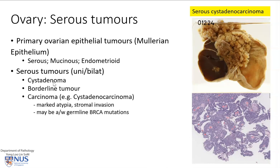There are three main grades of these tumours. We have the cyst adenomas, which are benign; we have the borderline tumours; and we have the carcinoma, of which this is an example. It can be called serous carcinoma or serous cyst adenocarcinoma if there is a large cystic component. These tumours may be unilateral or bilateral.